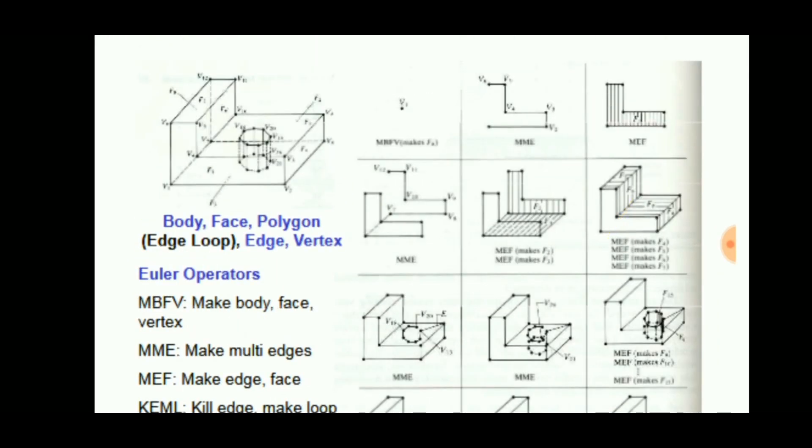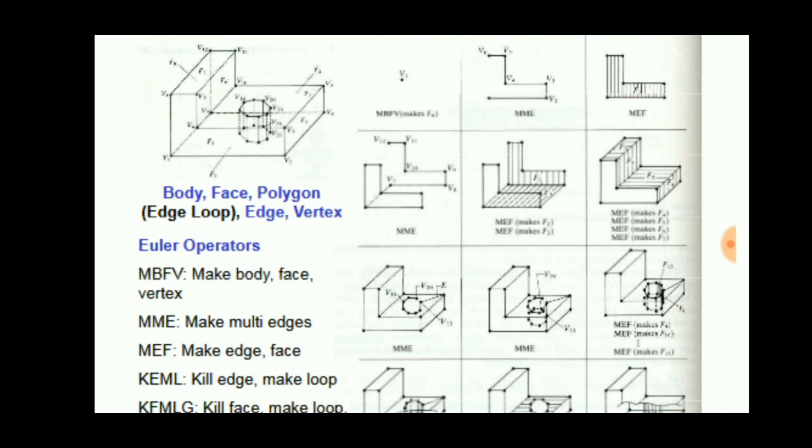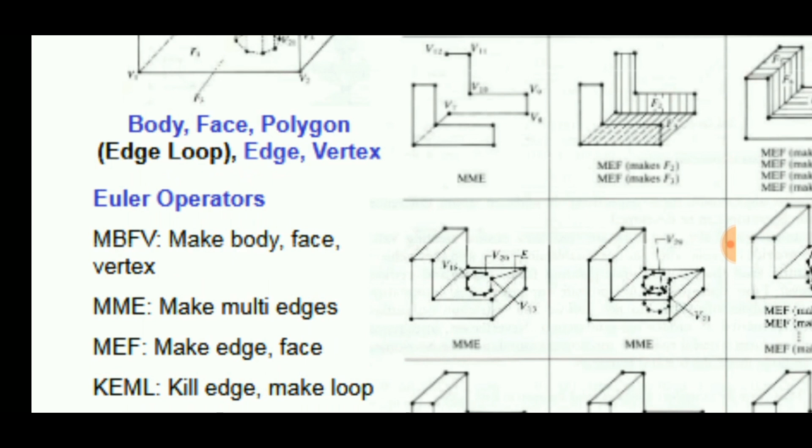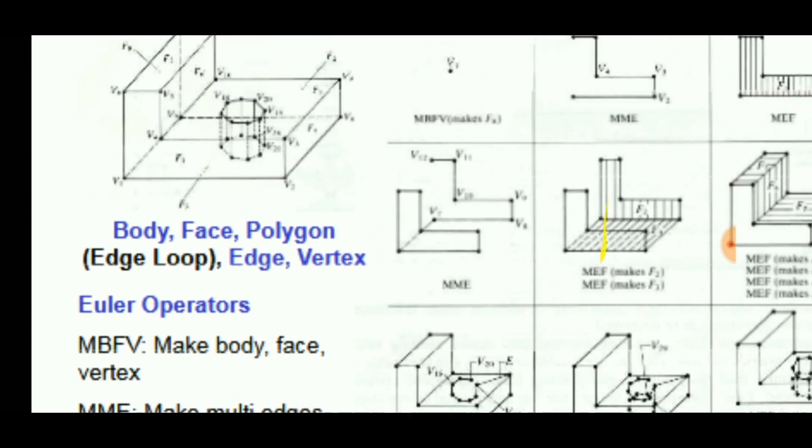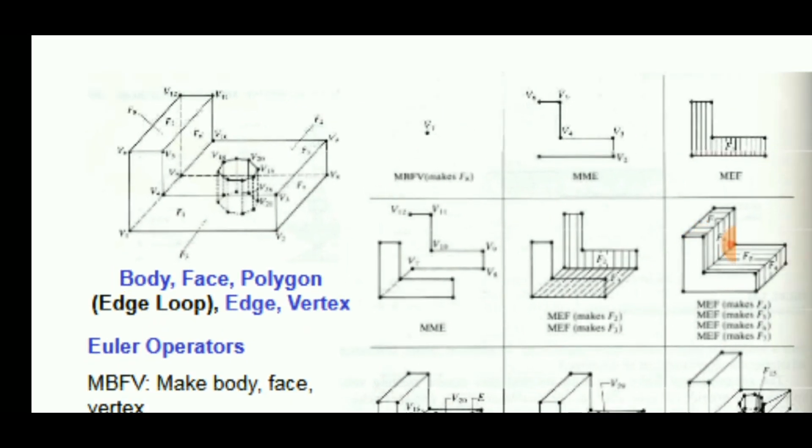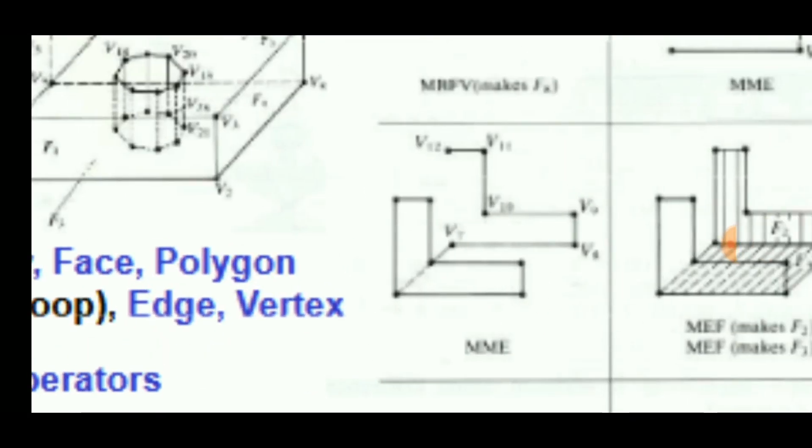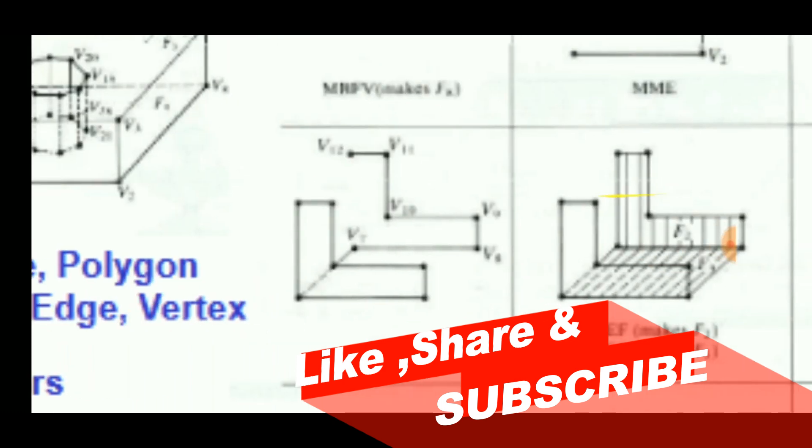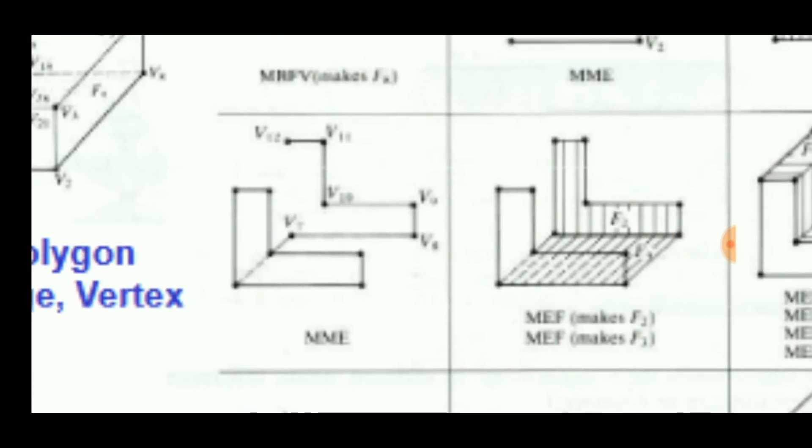These are some of the shapes or Euler operations that make the boundary representation effective. These are terms like MBFV make body face vertex, MME make multiple edges, etc. Here MME make multiple edges means that edges are made multiply so that the next step can move forward.